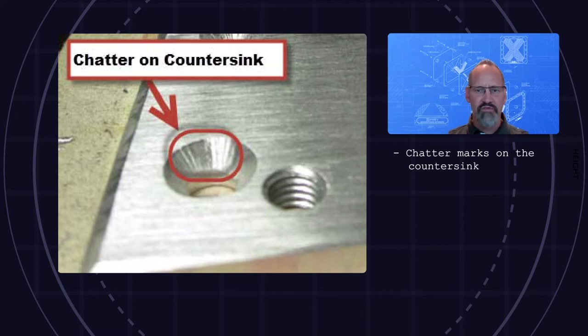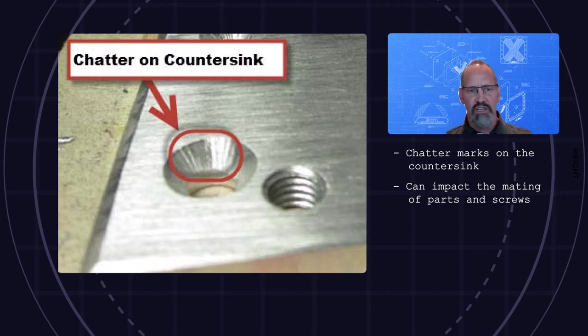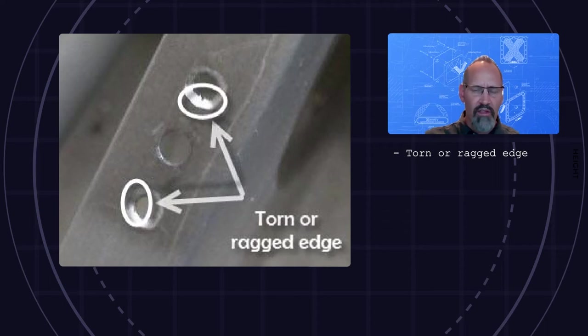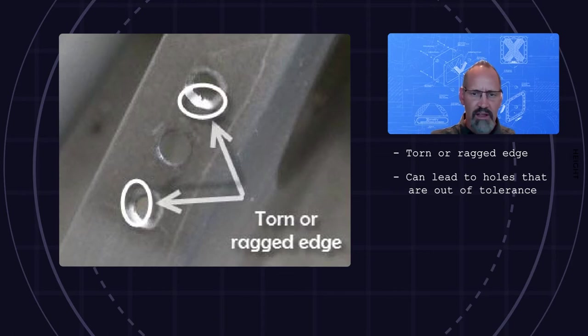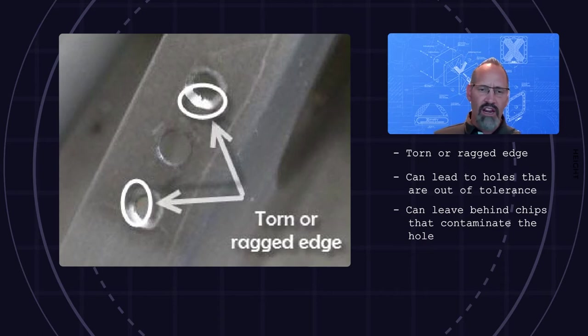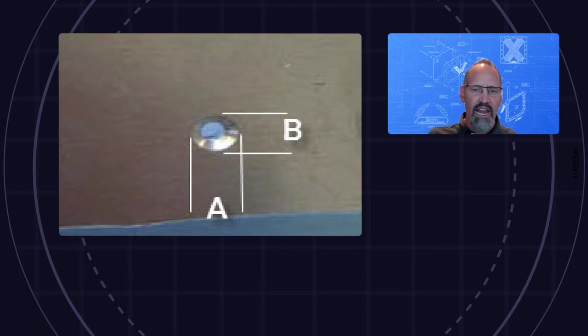In image two, we see unacceptable chatter marks that exceed the print surface finish, which can lead to less than full contact of mating parts and screws. In image three, we see an example of a torn or ragged edge where the hole breaks through the metal, which can lead to holes that are larger than tolerance. They can also lead to chips that contaminate the system as a whole, creating foreign object debris.